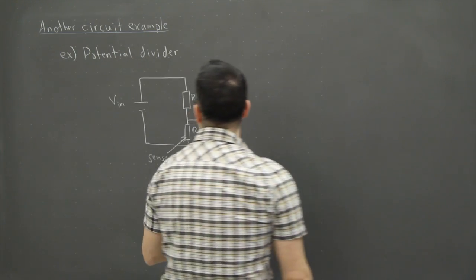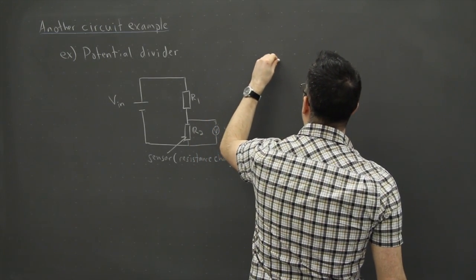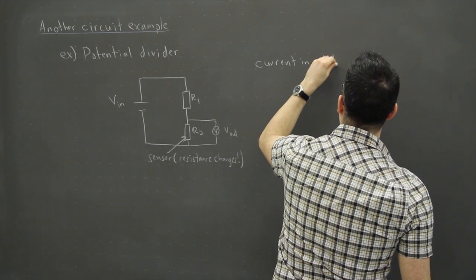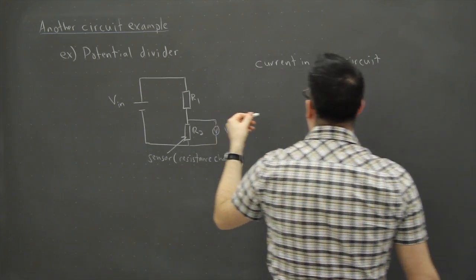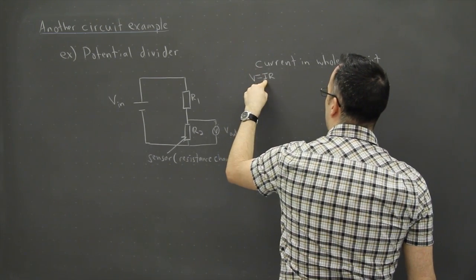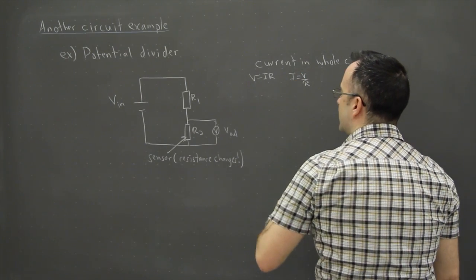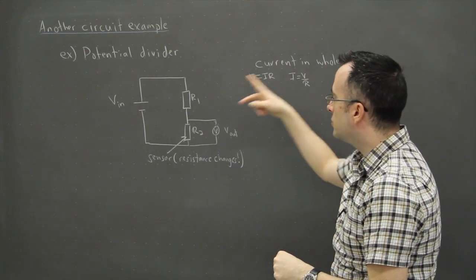So the first thing I'm going to do is just write down, well, what is the current in the whole circuit? The current in the whole circuit. Well, in other words, it's just like V equals IR, right? I mean, I don't know if you remember that, but that's Ohm's law. So I want I, so I is equal to V over R.